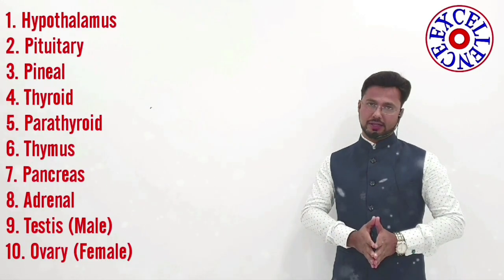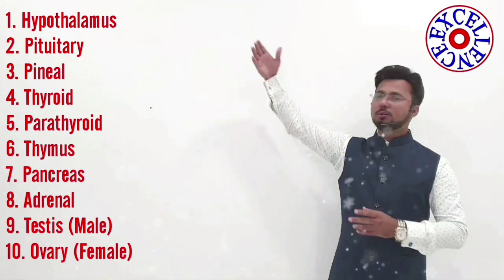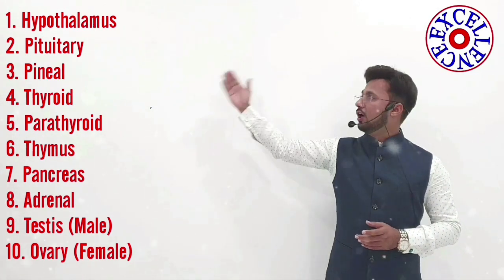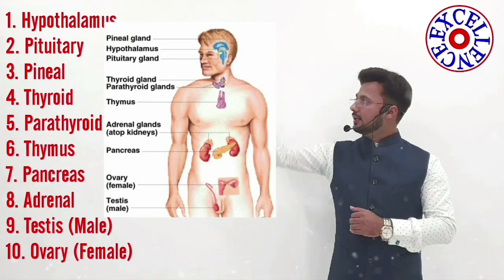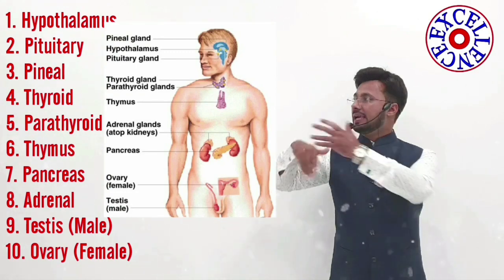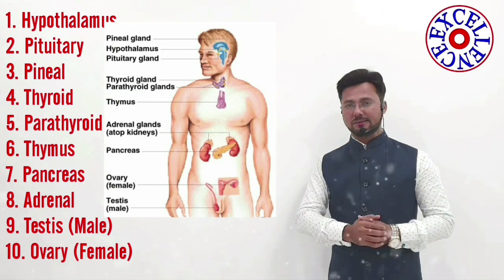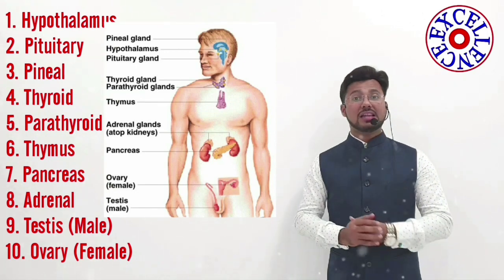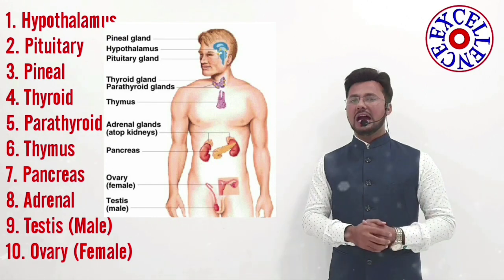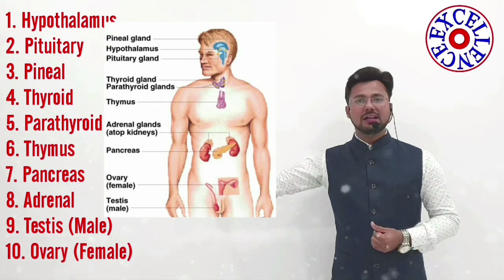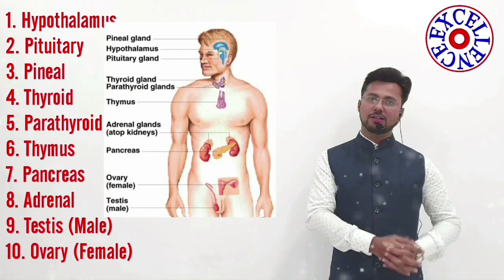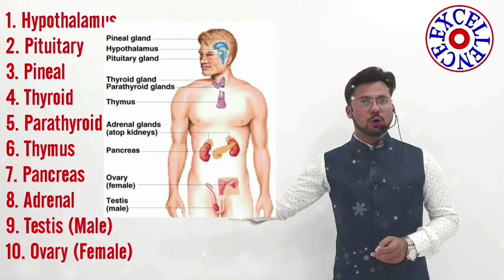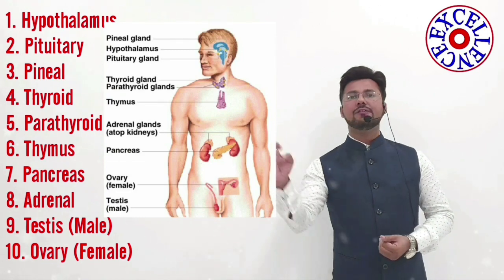The list of different endocrine glands present in the human body includes: the hypothalamus, the pituitary, and the pineal gland — all three of which lie in the skull. There is the thyroid gland; behind it comes the parathyroid gland. In the thoracic region we have the thymus gland. In the abdomen we have the pancreas, the adrenal gland, and the gonads — in males the gonad is the testis, and in females the gonad is the ovary. All these different endocrine glands release different hormones.